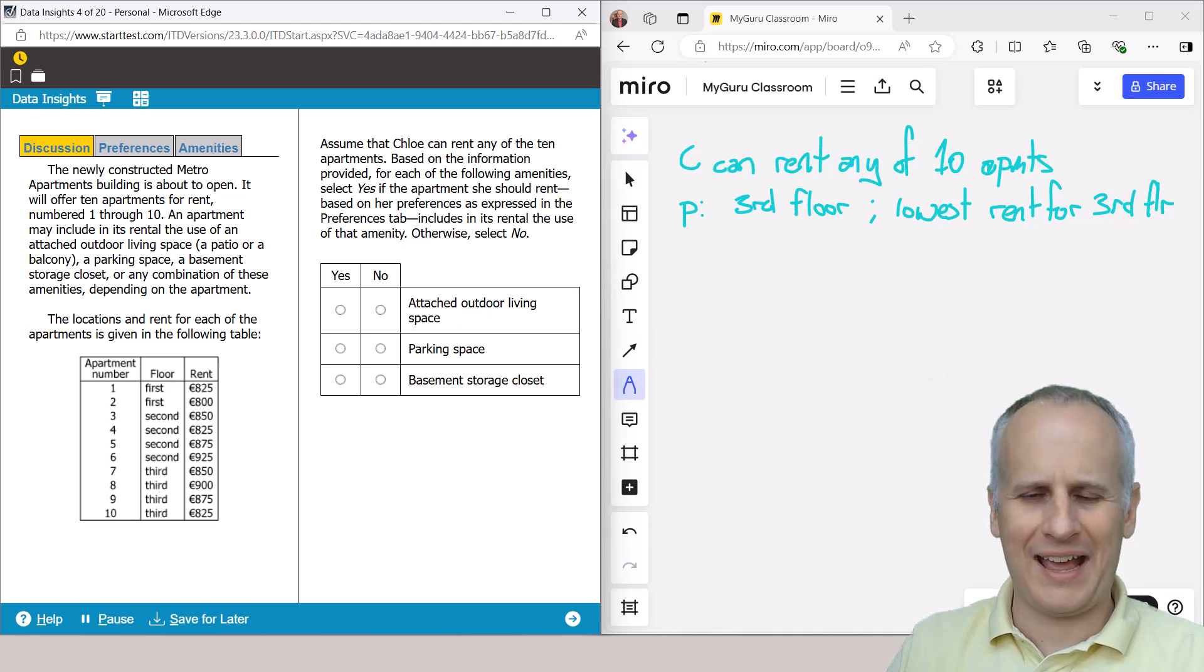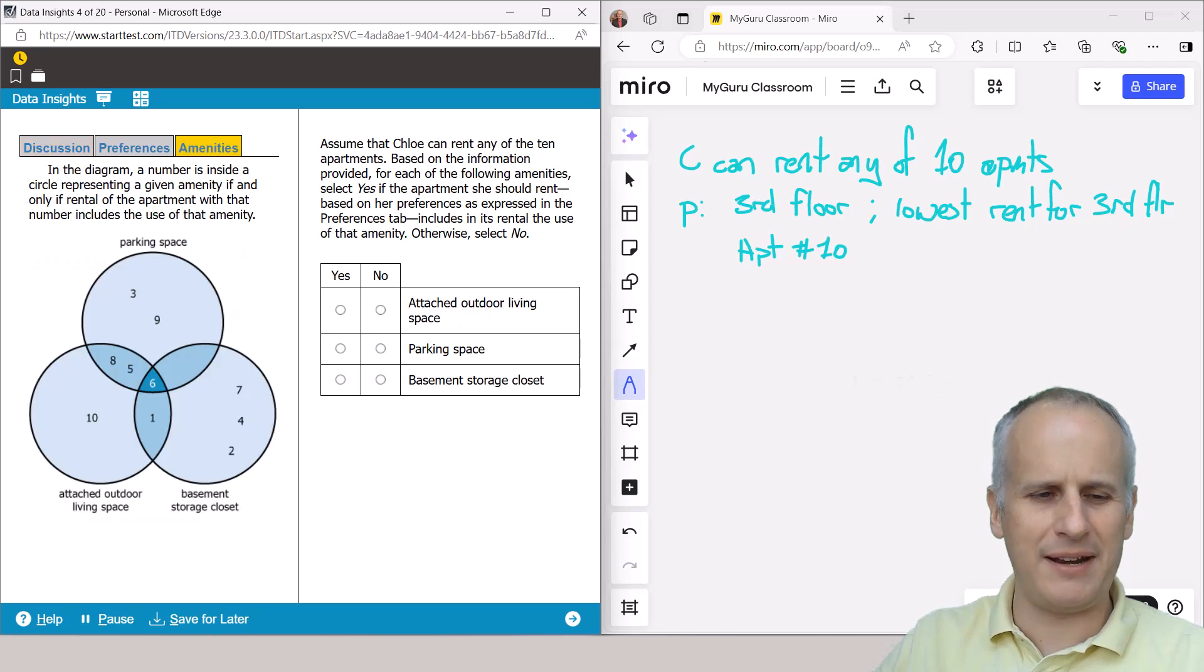So we're looking at the third floor and the lowest rent of the third floor. So if she gets both of her amenities, we know that she's going to rent based on this tab, apartment number 10. So we now know which apartment she's got. So we go to the amenities, and we're looking for apartment 10. And we should see that apartment 10, well, it does have an attached outdoor living space, but it doesn't have a parking space. And it doesn't have a basement storage closet. And this made it relatively straightforward. And now we can move on to the next question.